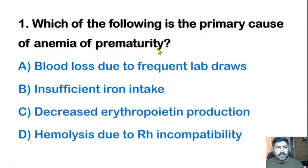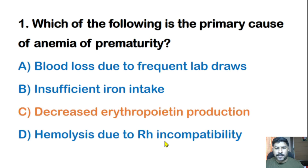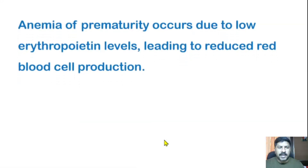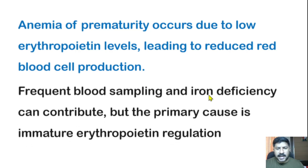First question: Which of the following is the primary cause of anemia of prematurity? Options: blood loss due to frequent lab draws, insufficient iron intake, decreased erythropoietin production, or hemolysis due to Rh incompatibility. The correct answer is decreased erythropoietin production. In prematurity, there will be decreased erythropoietin, which leads to decreased hemoglobin production.